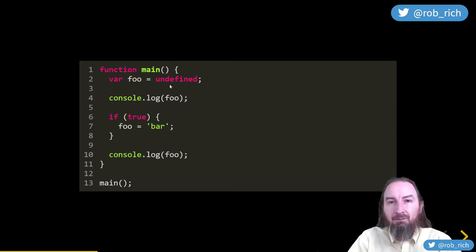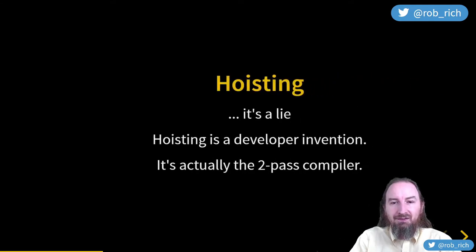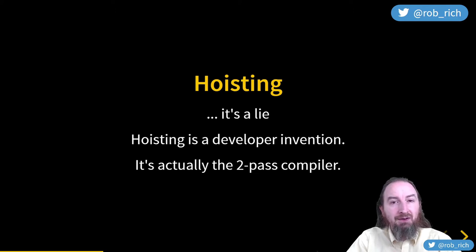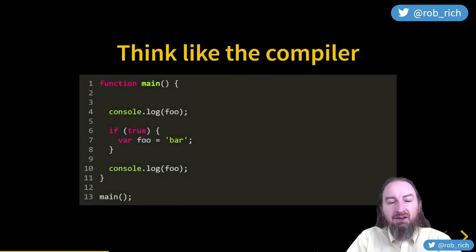In our minds we've kind of tricked ourselves into believing that variables get hoisted — it makes sense to think we move the variable declaration up and set it to undefined. Now that variable hoisting is a convenient lie we tell ourselves, but that's not actually how it works. How it works is this two-phase compiler. Hoisting is a lie — a very convenient lie — but it's a lie.